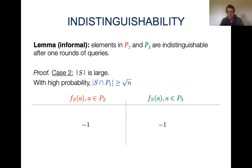Combining these two cases, we see that with high probability over the query set S, the marginal contributions of elements in P2 and P3 are equal — so in some sense, these elements are indistinguishable.